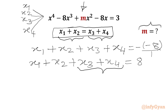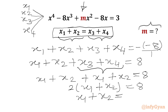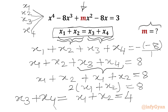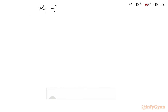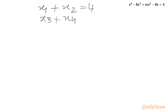So in place of x3 plus x4 we can write x1 plus x2. So we write x1 plus x2 plus x1 plus x2 equal to 8, or 2 times (x1 plus x2) equal to 8. So x1 plus x2 equals 8 over 2, which is 4. Since x1 plus x2 equals x3 plus x4, we also have x3 plus x4 equal to 4.